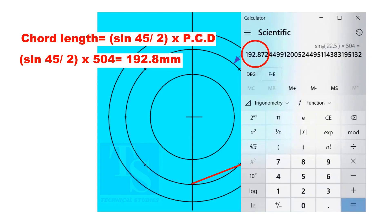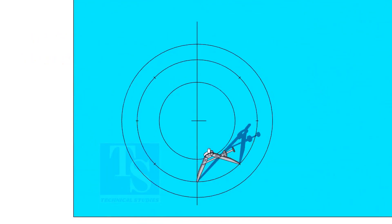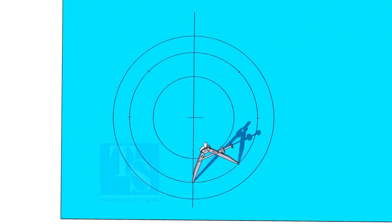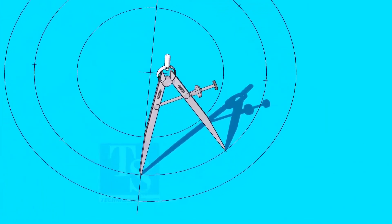The chord length is 192.8 millimeters. Adjust the divider to 192.8 millimeters and divide the PCD into 8 parts.